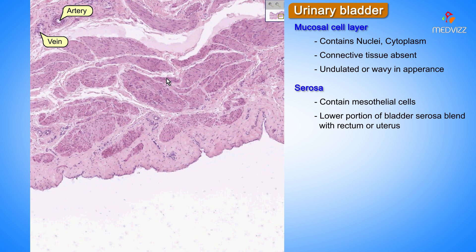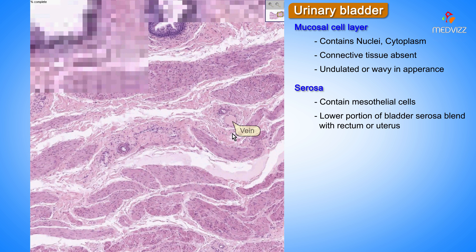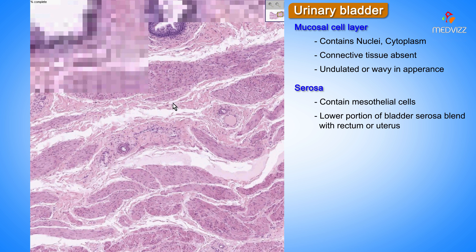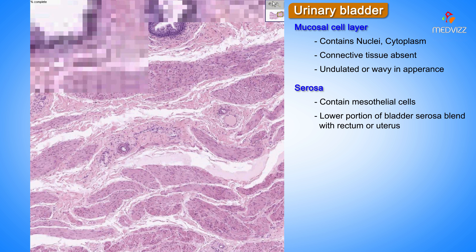The dome and much of the anterior and posterior surface is a true serosa. Here's an artery, there's a vein, here's smooth muscle bundles, here's connective tissue of the serosa or adventitia, there's a vein, here's an artery, here's some more connective tissue. Notice that you may very well have a hard time differentiating the spindly fibroblasts of the connective tissue from the spindly nuclei of the actual smooth muscle bundles of the detrusor muscle.